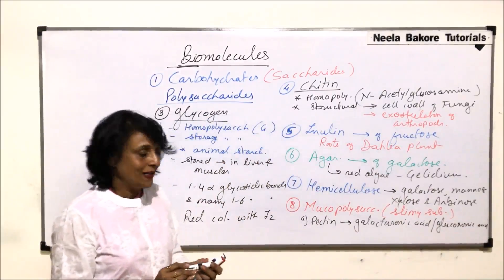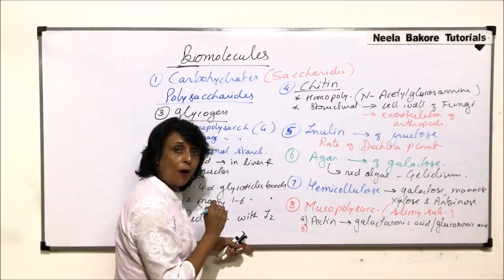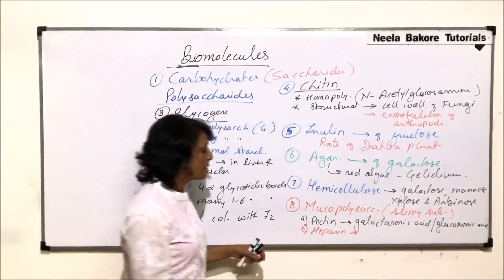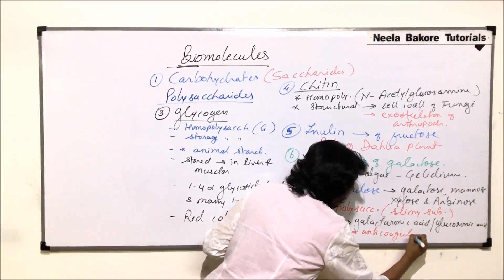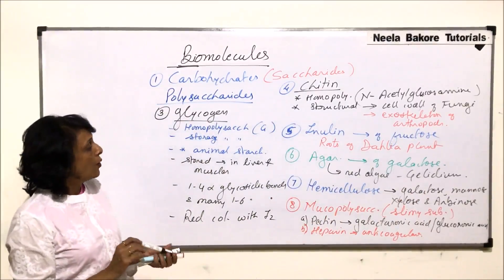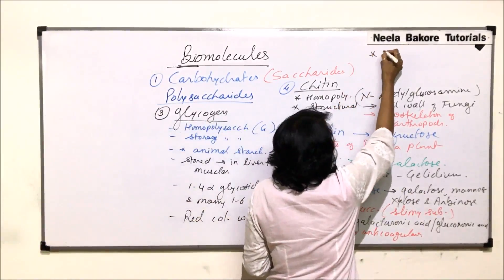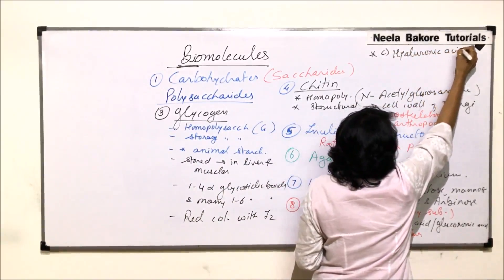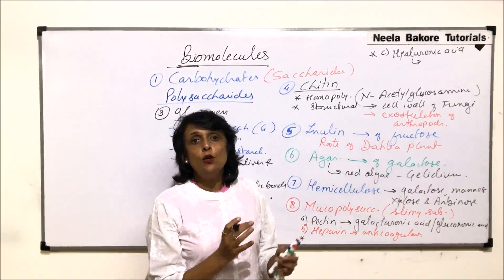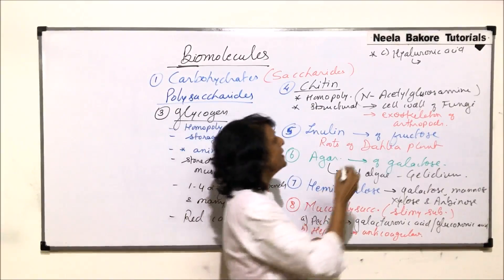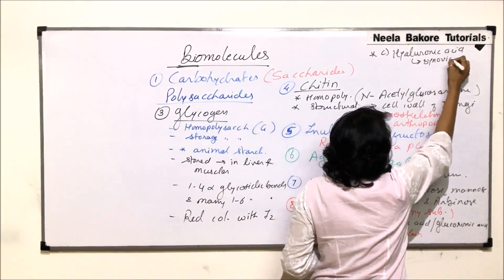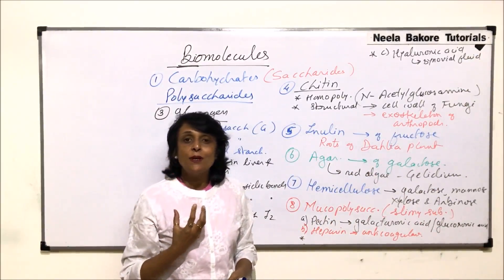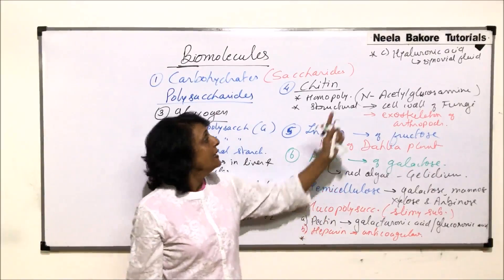Pectin is found in the middle lamella. Another example of a mucopolysaccharide is heparin, which is an anticoagulant found in our blood. Another mucopolysaccharide is hyaluronic acid, which is found in joints in synovial fluid where lubrication is required. It is also found in the vitreous humor — the posterior chamber of the eye, also known as Barton's jelly.